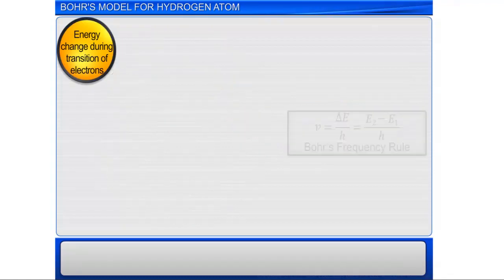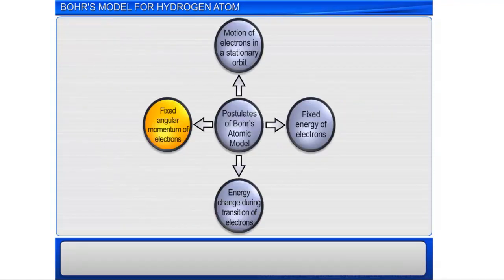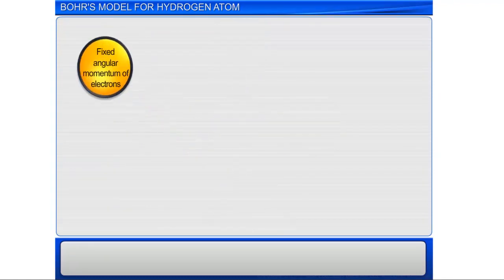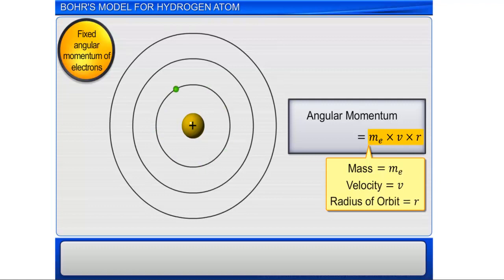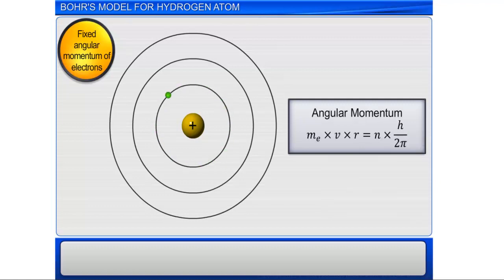The fourth postulate states that an electron moving in a circular orbit has an angular momentum equal to the product of its mass ME, linear velocity V, and radius of orbit R, which can be expressed as an integral multiple of H divided by 2 pi.